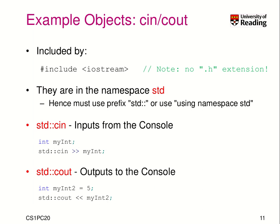When we talk about object orientation, we already saw some example objects: cin and cout, which are part of the iostream header and part of the standard library. They use the namespace std, so you will often find 'std::' or 'using namespace std' in such code. We use cin, which inputs data from the terminal, like scanf or getchar in C. And cout, which outputs data to the console, like printf.